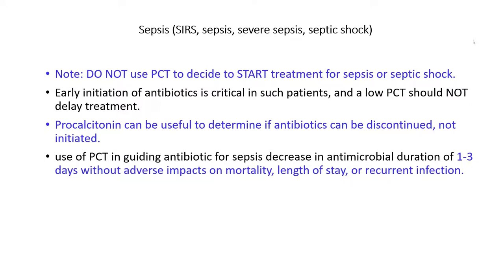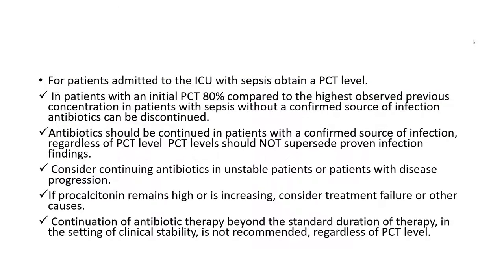In sepsis, procalcitonin level is not used to decide to start treatment for sepsis or septic shock, because these are emergency conditions requiring immediate antibiotics. Procalcitonin level can be used to decide whether to discontinue antibiotics in sepsis after the patient has fulfilled the minimal standard duration of treatment and is improving. Use of procalcitonin level to guide antibiotic discontinuation in sepsis results in one to three fewer days of antibiotics without adverse impact on mortality, length of stay, or recurrent infections.